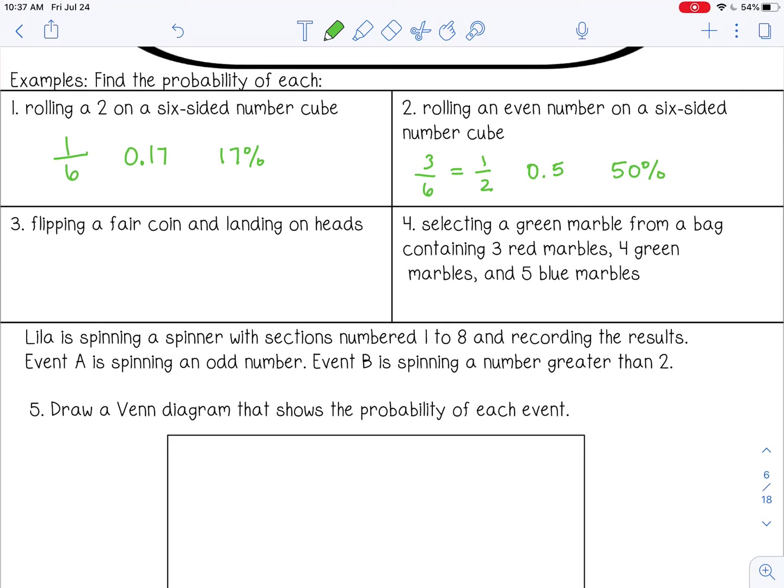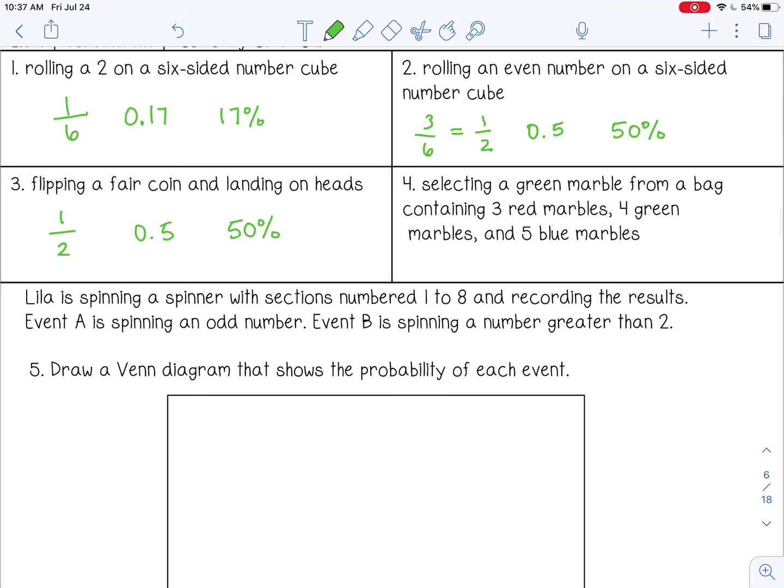Number 3. Flipping a fair coin and landing on heads. So only one side has heads, and there's 2 sides total. So 1 out of 2, 0.5, or 50%. And then number 4.